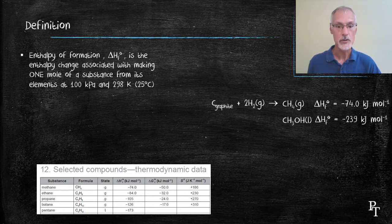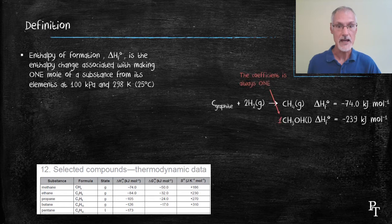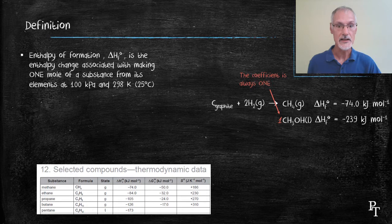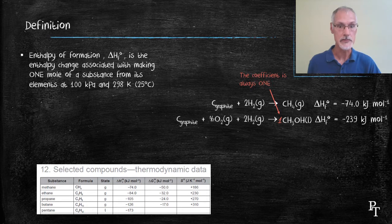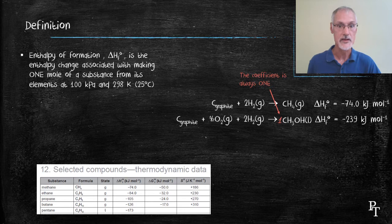To make it from its elements at room temperature, I can only make one mole of substance, so when I balance the equation, I have to finish with one mole of product. That then allows me to have half a mole of O2 gas, because I am allowed to have fractional coefficients, because I'm restricted to making one mole of a substance.